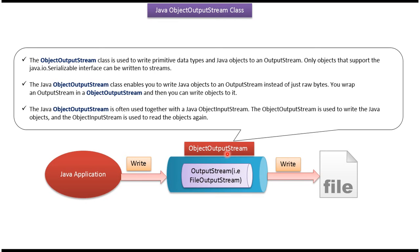ObjectOutputStream is often used together with ObjectInputStream. ObjectOutputStream is used to write Java objects, and ObjectInputStream is used to read those Java objects again.